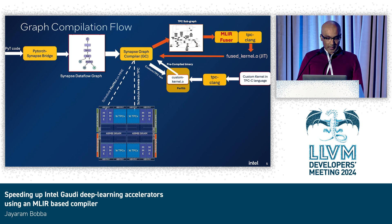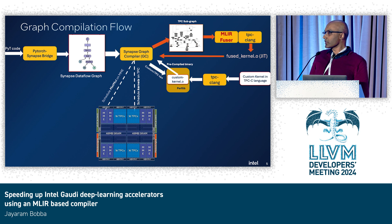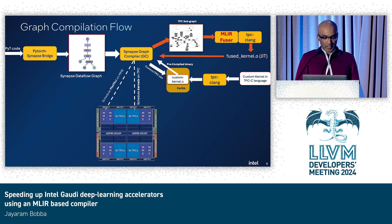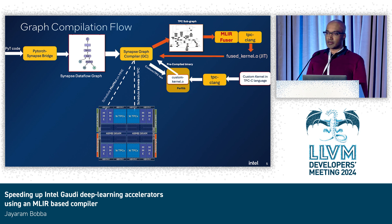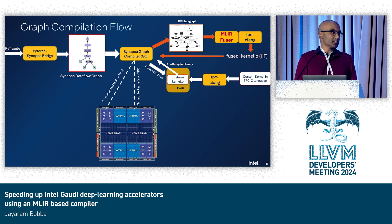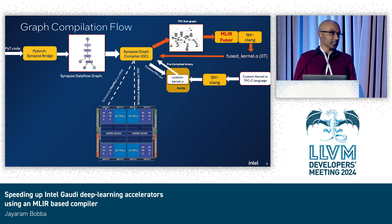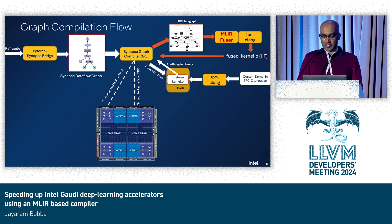This picture shows the high-level compilation flow on Gaudi, and it shows where the fuser gets invoked and the components it interacts with. On the left, you see PyTorch code that is getting traced, and it will be converted into a data flow graph, which is then handed off to the graph compiler. The graph compiler does a bunch of optimizations, and while it knows how to deal with matrix multiplications and how to configure the MMEs, it doesn't really bother generating code for the TPCs. These TPCs are programmable, and to keep an open operator set, it hands them off for other compilers to reason about these operations.